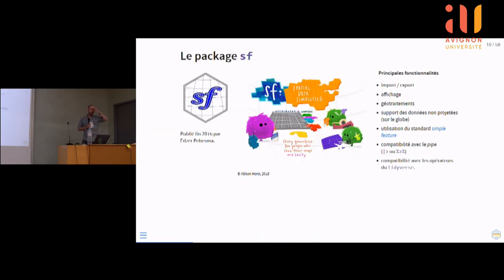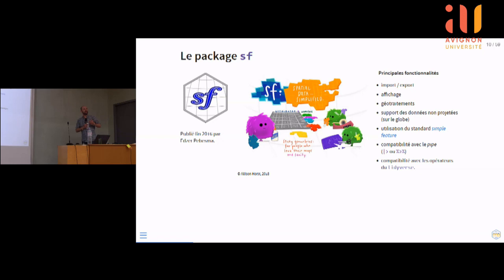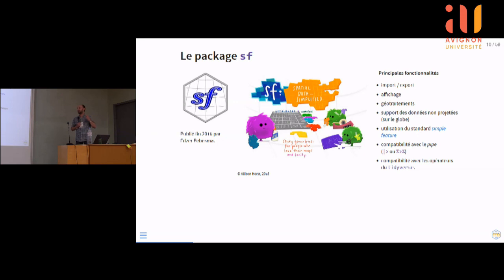Le package SF permet d'importer, d'exporter et d'afficher des données spatiales, de faire des géotraitements et toutes les opérations SIG. Nouveauté par rapport à l'ancienne stack basée sur SP : il gère la rotondité des opérations géospatiales sur un globe, en utilisant la librairie S2 de Google. Il utilise le standard Simple Feature, aussi utilisé par PostGIS. Les fonctions de SF sont très compatibles avec le pipe et avec les opérateurs du tidyverse, ce qui permet d'enchaîner les opérations de manière agréable.